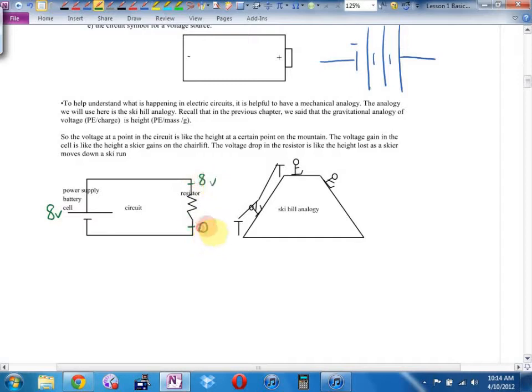Right here you would measure zero volts because you've gone down the ski hill and you're back on the ground. What's the voltage right there? Zero volts. What does the chairlift do? Connor, the chemical reaction lifts them back up to eight volts again, so they can go through the ski hill again. That's our analogy and it's not going to get much more complicated than that.